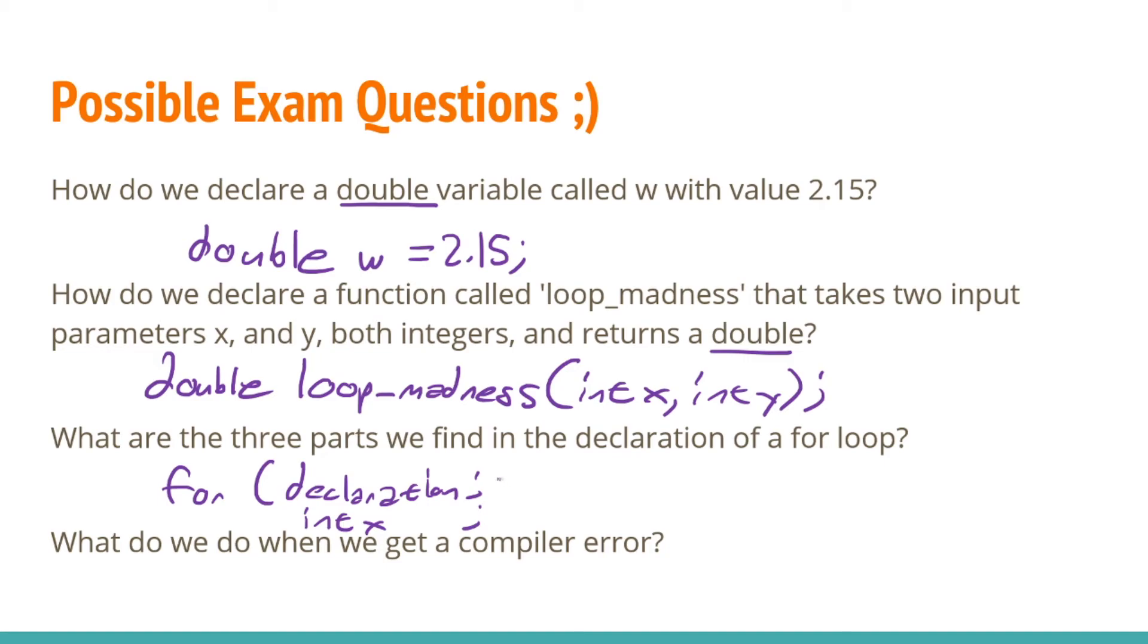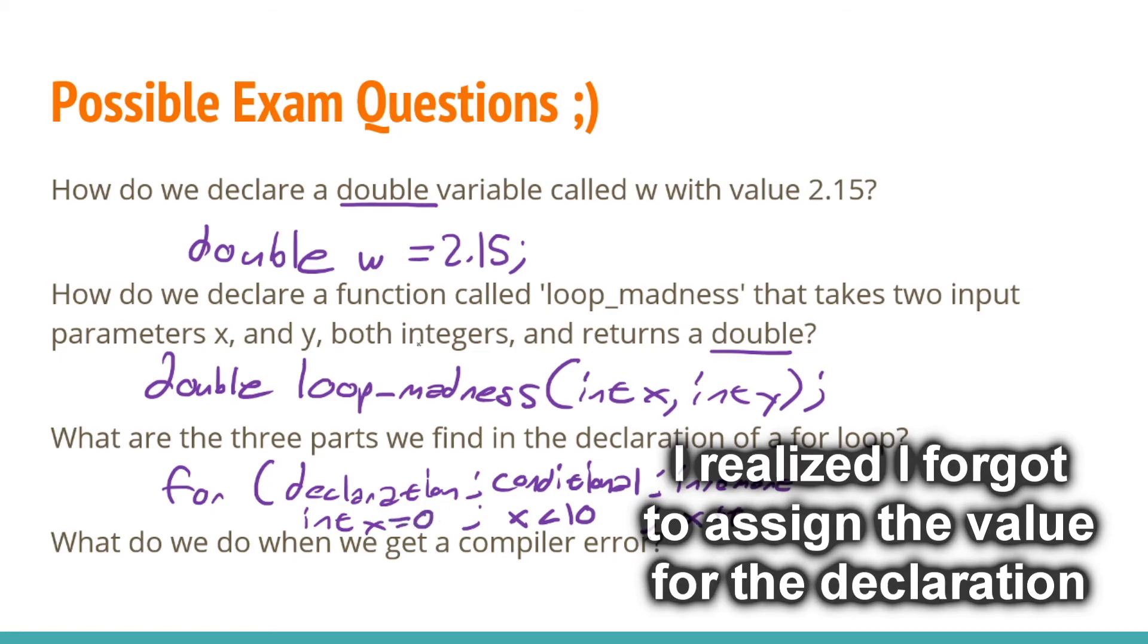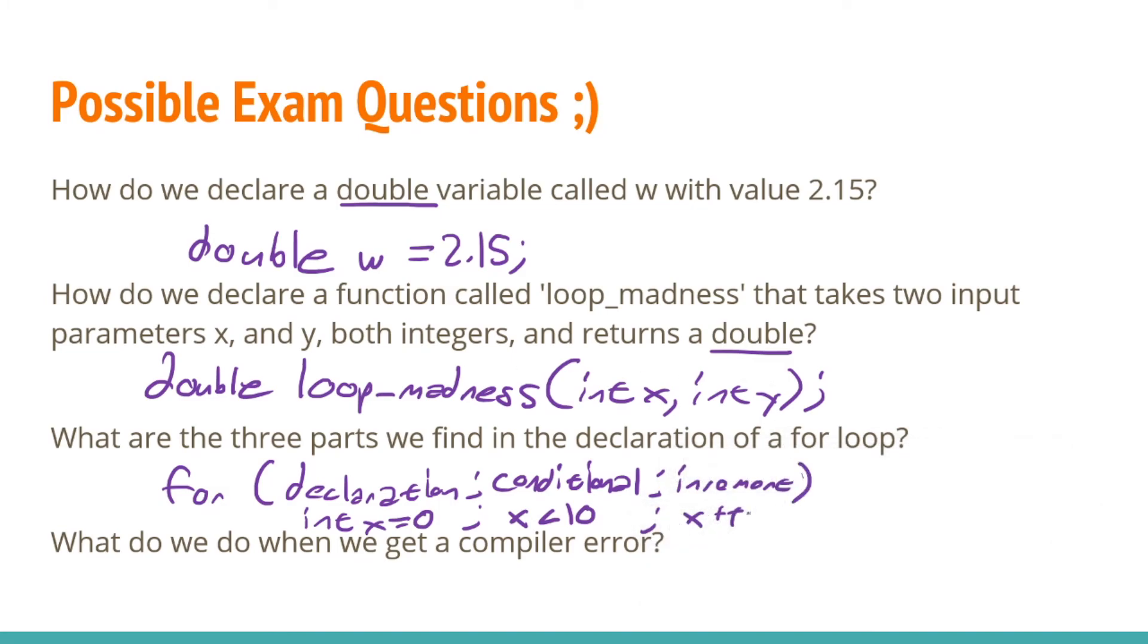The next part of our statement is the conditional. And this can be something that tests our variables, such as x is less than 10. We'll need a semicolon to separate out the next. And the last step is our increment. We will then close this off with parentheses, and our for loop has been declared.